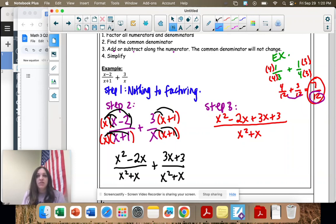Just like the 12ths, we had two in our answer, it's just one. Now we're going to simplify by combining like terms on our numerator. I have x². Then I have -2x+3x which is 1x, and then the +3.